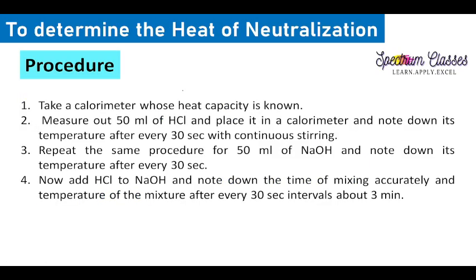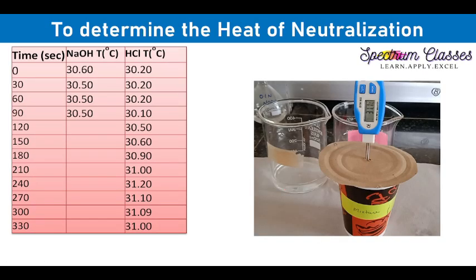Now coming to the procedure: we take 50 ml of HCl and in another disposal glass we have 50 ml of NaOH. After every 30 seconds we are measuring their temperature until the temperature remains constant. Once both solutions attain a constant temperature, we add the NaOH to the 50 ml of HCl and again take temperature readings after every 30 seconds.